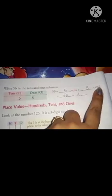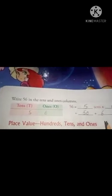Now, turn your page. Write 56 in the tens and ones column. Ones column in the columns we have 6 and 5 in the columns we have 10. 56, 5 tens plus 6 ones. That is 50 plus 6.